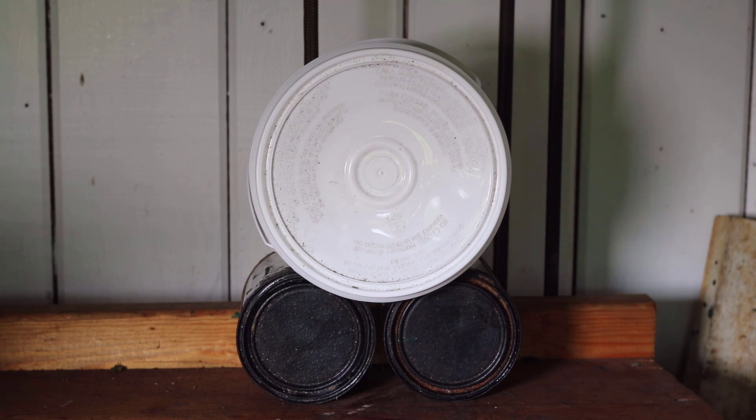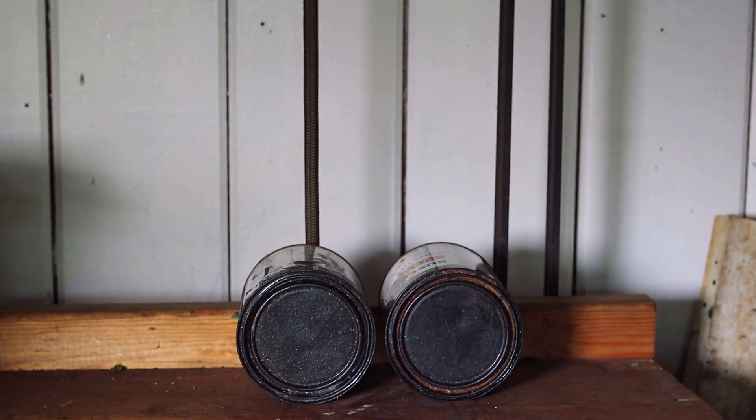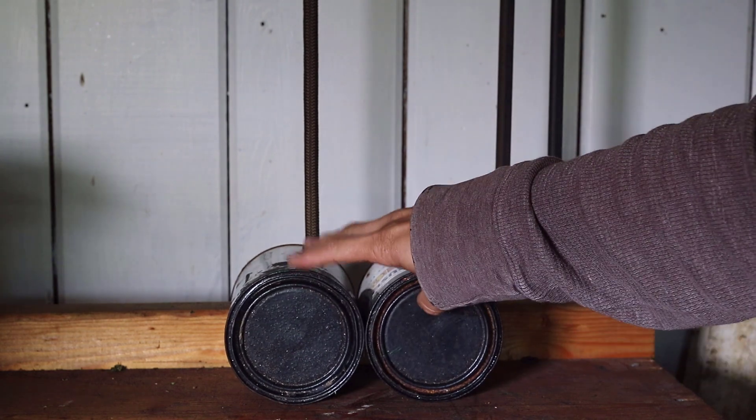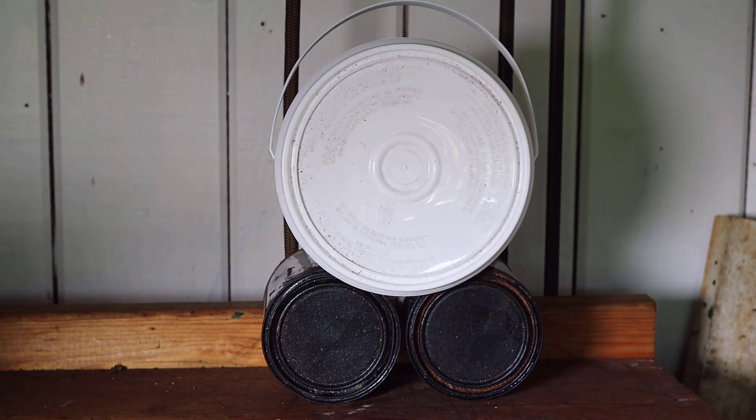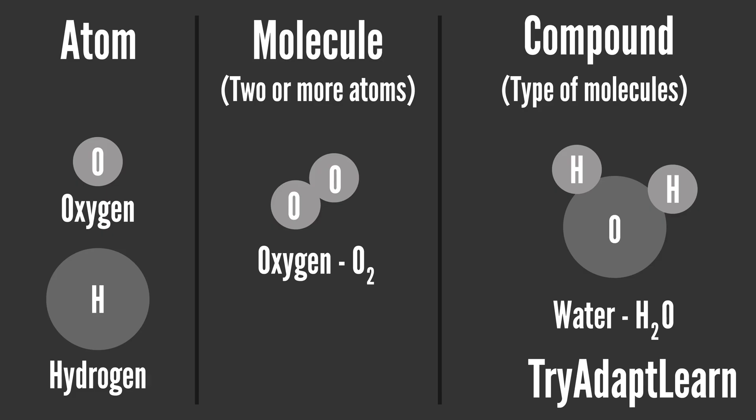Please keep in mind that unlike the representations in this video, atoms and subatomic particles are actually spherical in shape. So just as an atom is an individual, two or more atoms bonded together can create a molecule. Water or H2O is a compound or type of molecule.